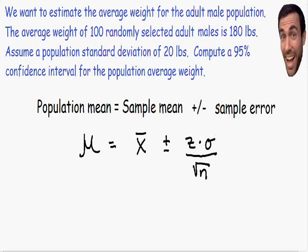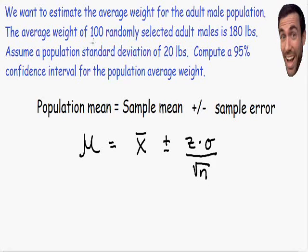The standard deviation for this particular problem is given to us — we know it's 20 pounds. Our sample size N is going to be 100, because we took the average weight of 100 randomly selected adult males.